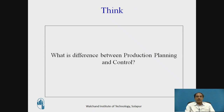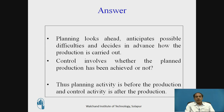What is the difference between production planning and control? Planning looks ahead, anticipates possible difficulties, and decides in advance how production is carried out. Control involves determining whether the planned production has been achieved or not. Planning is an earlier stage; control is a stage after production is underway. Planning activities occur before production, whereas control activities occur after. Control seeks to identify the gap between actual versus planned.